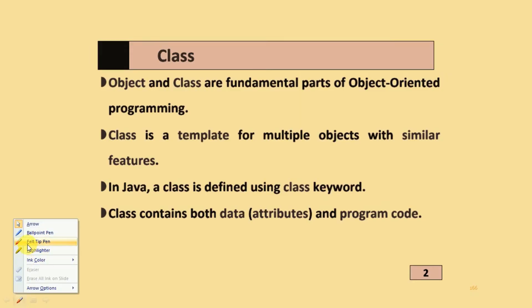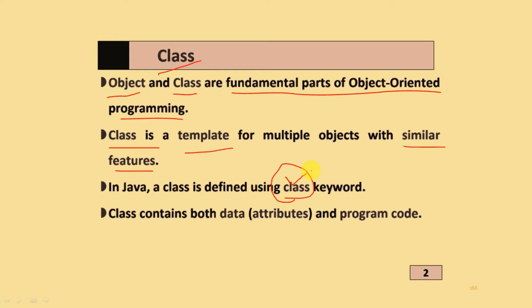First, what is class? Object and class are fundamental parts of object-oriented programming. Class is a template for multiple objects with similar features. In Java programming, the class is defined using the class keyword. Class contains both data, or attributes, and program code.